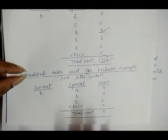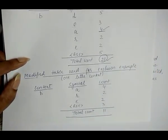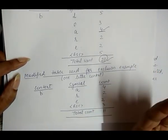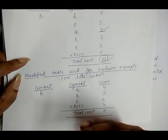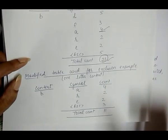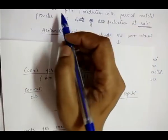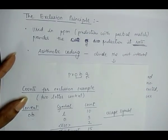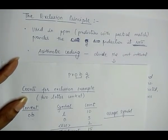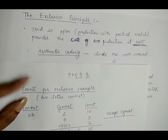So, the exclusion principle means that in order to reduce the rate, we discard or eliminate some letters from the context that have already been accounted for elsewhere. This exclusion of symbols is called the exclusion principle, and its main purpose is to reduce the rate. I hope you understand this exclusion principle. If you have any query, ask in our comment section, and if you like our video, please subscribe to our channel and share it with your friends and classmates. Thanks for watching.